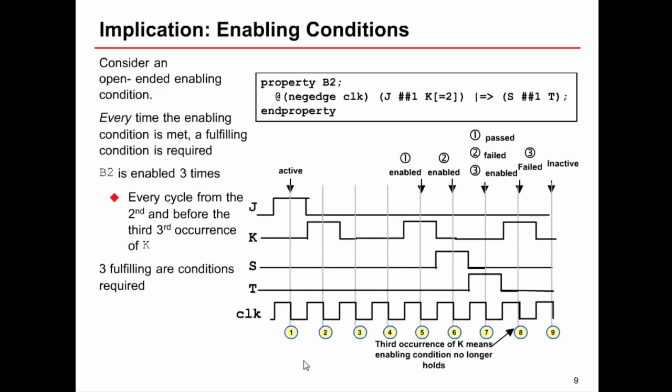So if we were to look at this another way, our property is enabled at cycle five, requiring on the next cycle s followed by t. And it's also enabled at six, requiring s followed by t on the next cycle. The only time we actually observe s followed by t, our required fulfilling condition, is starting from cycle six. So cycle six and cycle seven. The assertion which got enabled at cycle five passes at cycle seven.